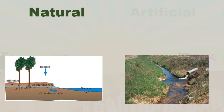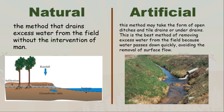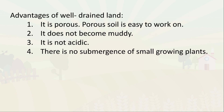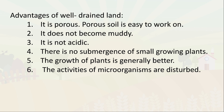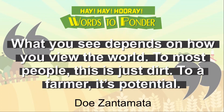Methods of drainage include natural and artificial. In the natural method, excess water drains from the field without human intervention. The artificial method may take the form of open ditches and tile drains or under-drains, which is the best method as water passes down quickly, avoiding surface runoff. Advantages of well-drained land: the soil is porous and easy to work on; it does not become muddy; it is not acidic; there is no submergence of small growing plants; plant growth is generally better; microorganism activity is supported; well-drained land prevents removal of topsoil, which is the most fertile part; and it helps in flood control.